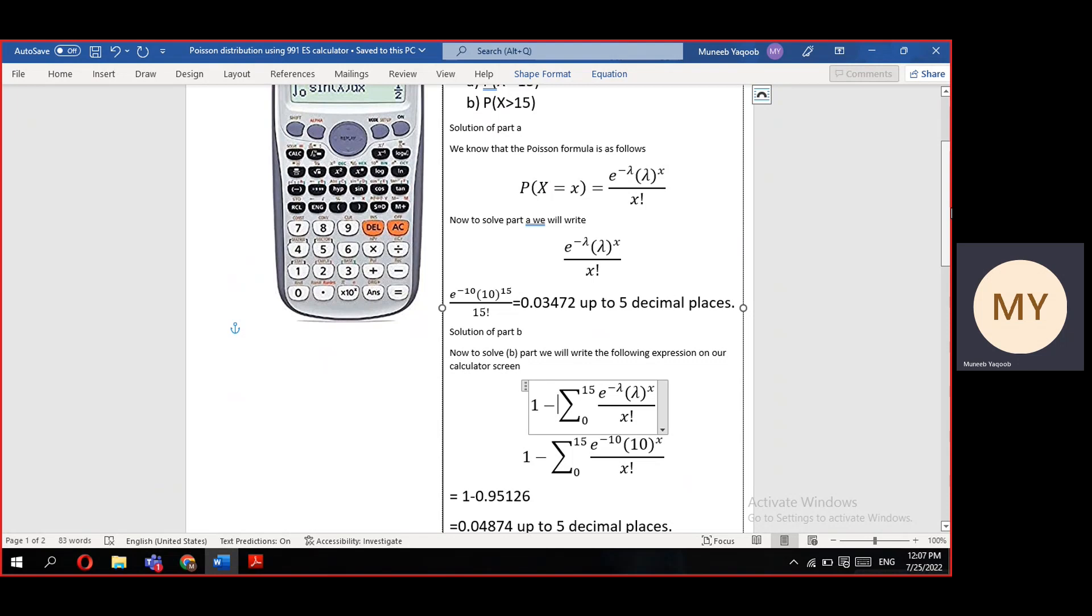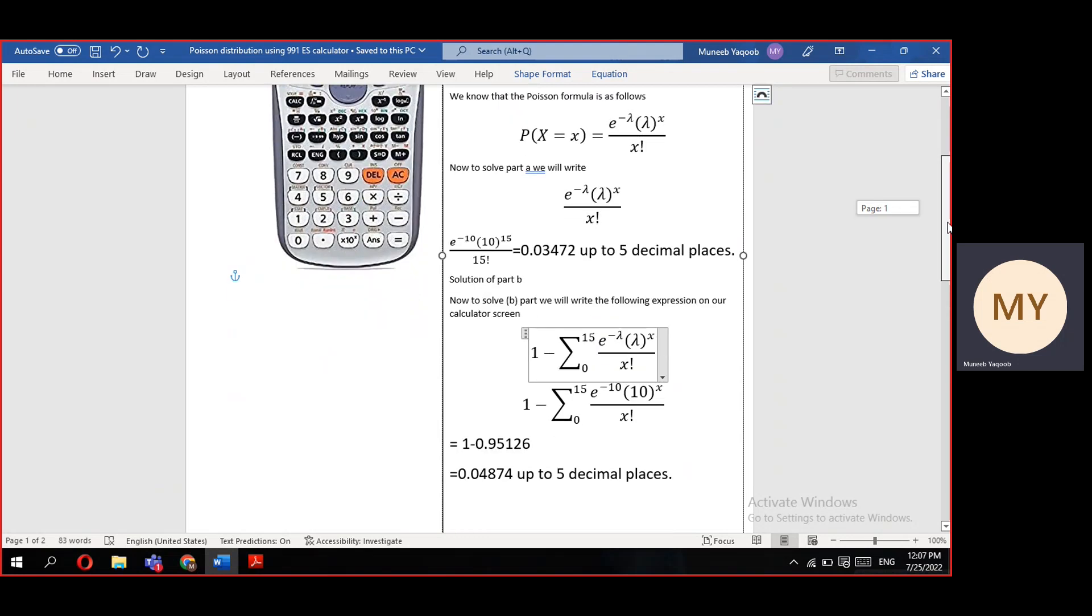write e power minus lambda times lambda power generic x. To write this generic x, press the alpha button and then the x button just above your 9 button. You will complete this expression and get a result of 0.95126 as summation 0 to 15. After subtracting it from 1, you will get your final result as 0.04874.